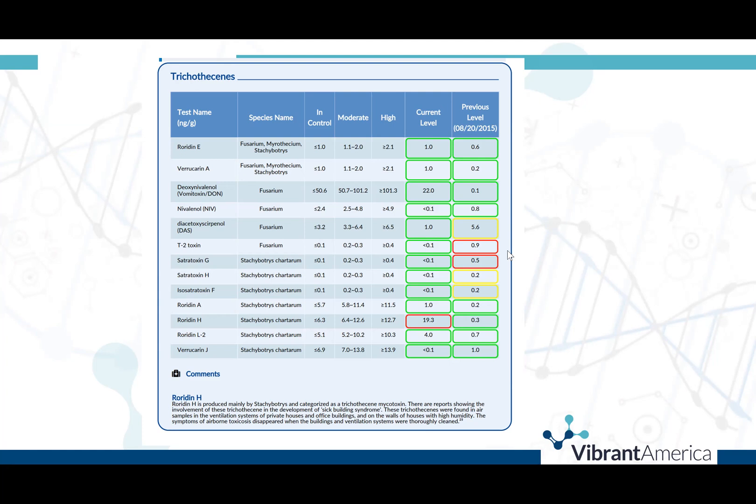Trichothecenes are also associated with Stachybotrys chartarum, also known as black mold, which gets its name from black splotches on contaminated surfaces. Note that it can also be greenish-black in color and can be found on indoor surfaces and indoor air sampling. It can grow on materials such as fiberboard, drywall, and paper, and growth occurs when there is moisture from water damage, leaks, condensation, or flooding.